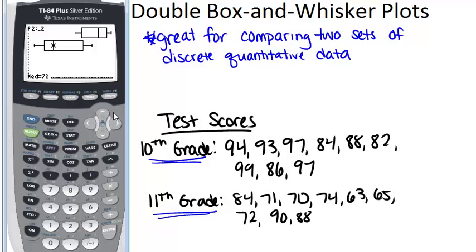So that's how you make a double box and whisker plot and again it's great for comparing two sets of discrete quantitative data especially when you want to be able to see the medians, the mins and the maxs really clearly.